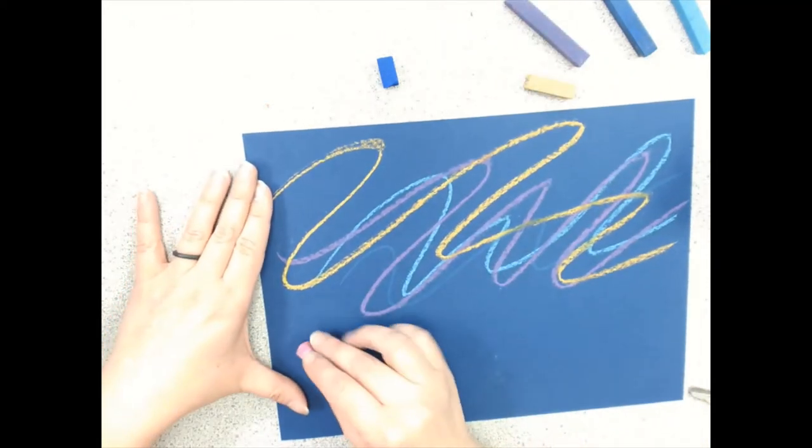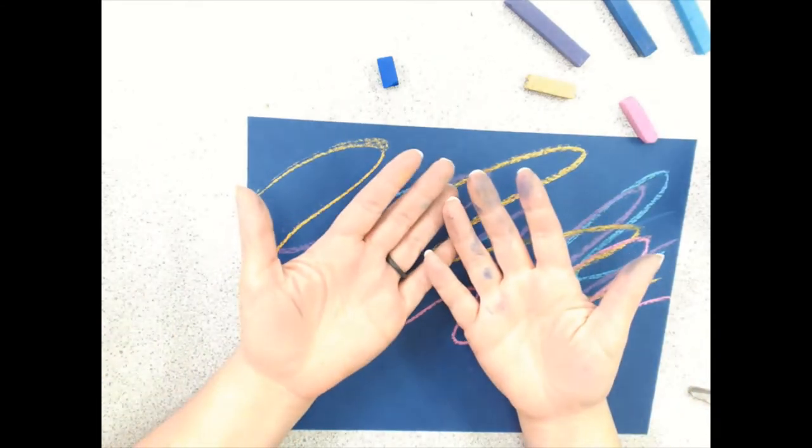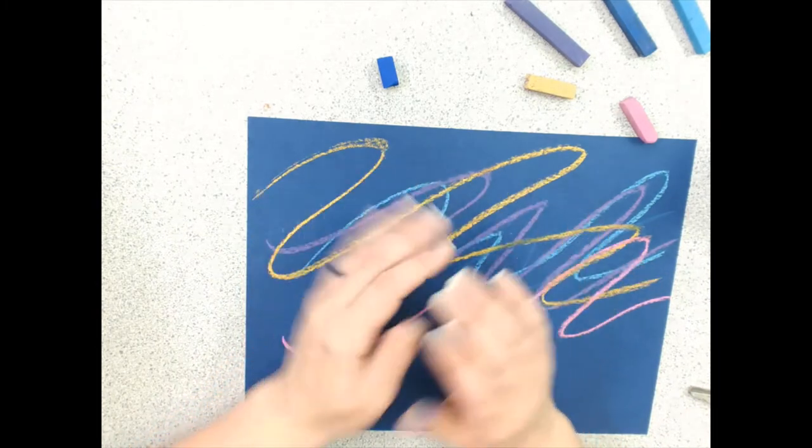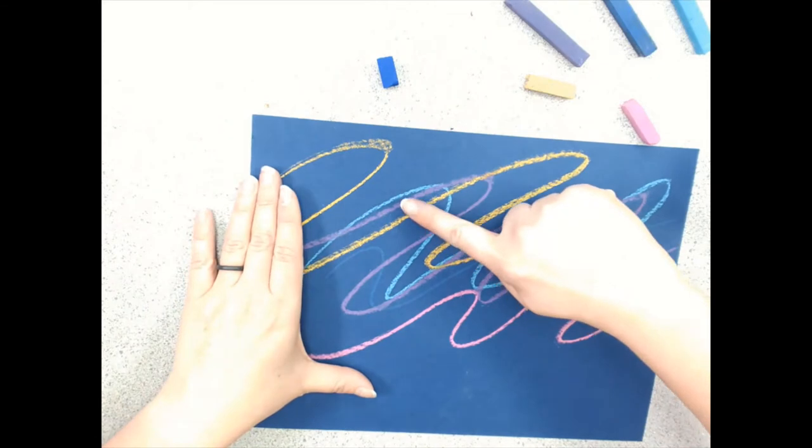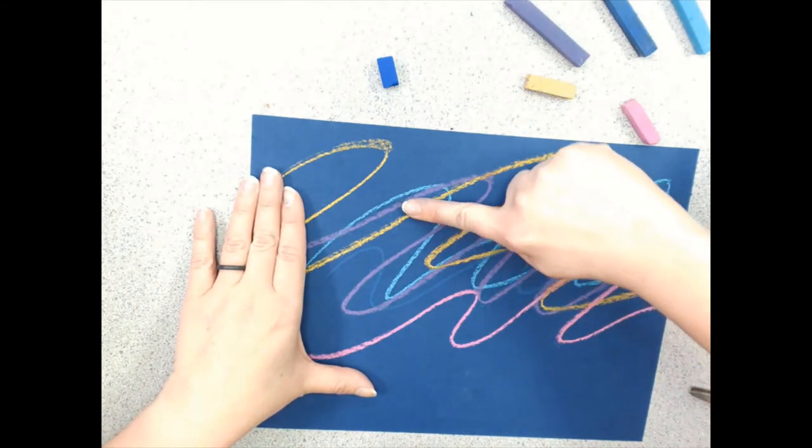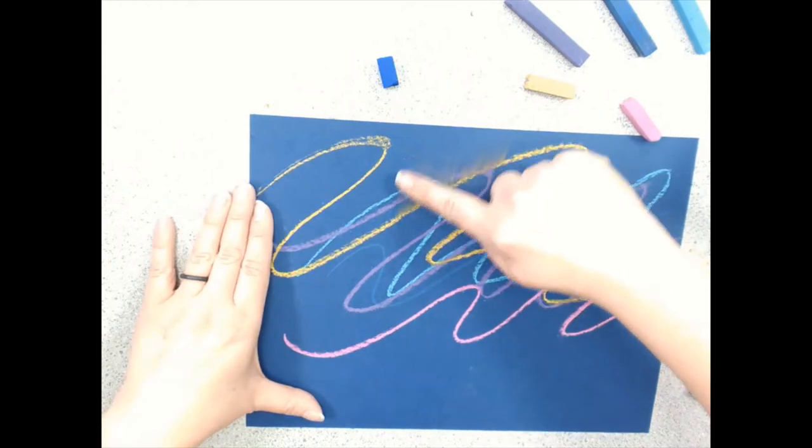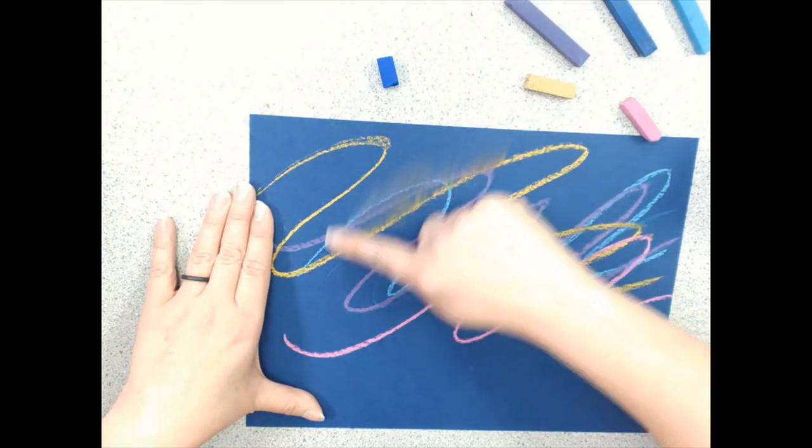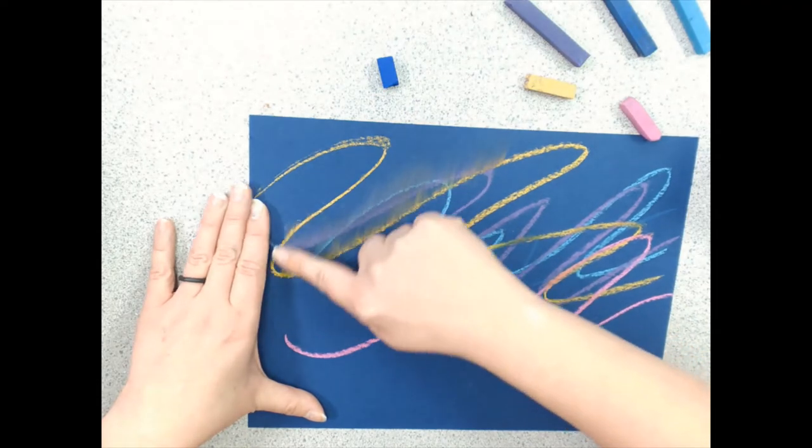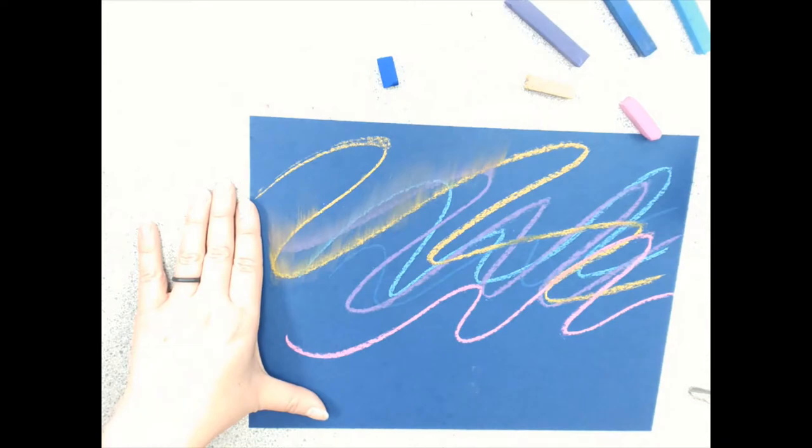All right, I think I'm pretty happy with my squiggles here. My hands are kind of messy, but here's what we're going to do next. We are going to take our finger, place it on the line, and push up just like that all over our lines. We're not going to push down. We're going to only push up. Okay, so I'm just going to speed up the video a little bit, and let you watch what that looks like. Here we go.